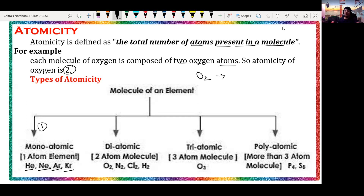Argon and krypton are also examples of monoatomic molecules — only one atom of an element is present. The second type is diatomic molecules. Those molecules that contain two atoms in their molecular form are called diatomic. For example, O2 has two oxygen atoms in one molecule, and N2 has two nitrogen atoms.